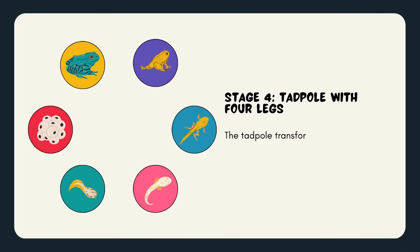Stage 4: Tadpole with four legs. The tadpole transforms into a young frog and it starts moving on the land and also breathes with lungs.